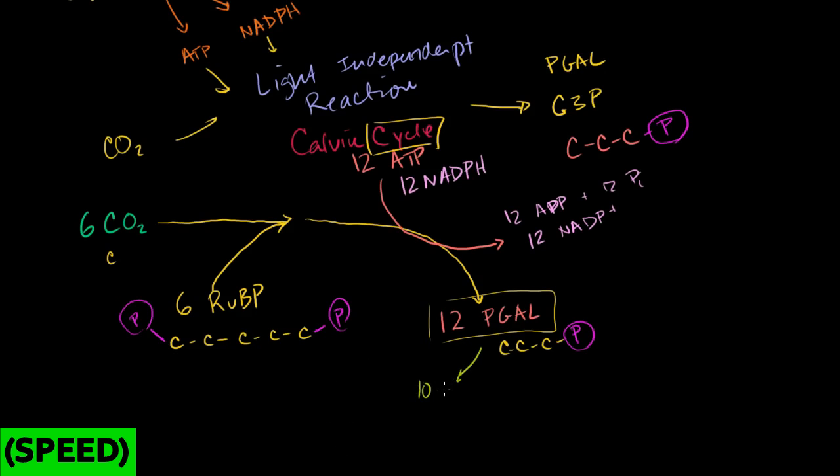So of the 12 PGALs, we're going to use 10 of them. We're going to have 10 PGALs, 10 phosphoglyceraldehydes, 10 PGALs we're going to use to recreate the ribulose biphosphate. And the counting works, because we have 10 3-carbon molecules, that's 30 carbons, then we have 6 5-carbon molecules, 30 carbons. But this, once again, is going to take energy. This is going to take the energy from 6 ATPs.